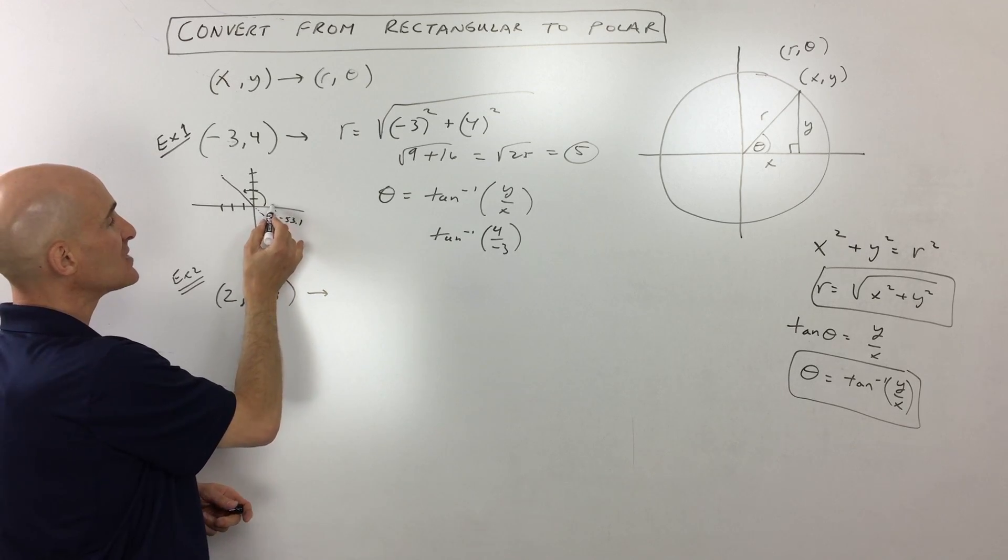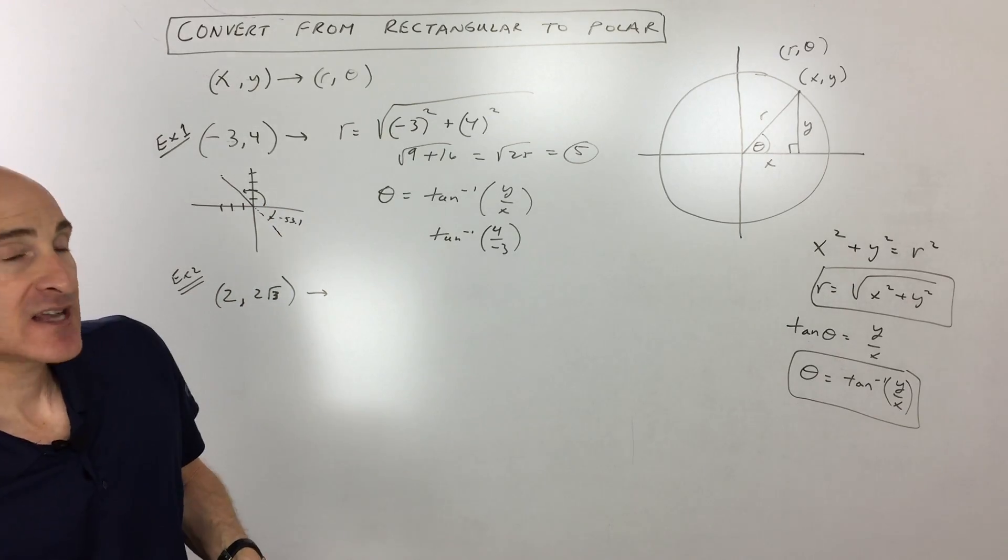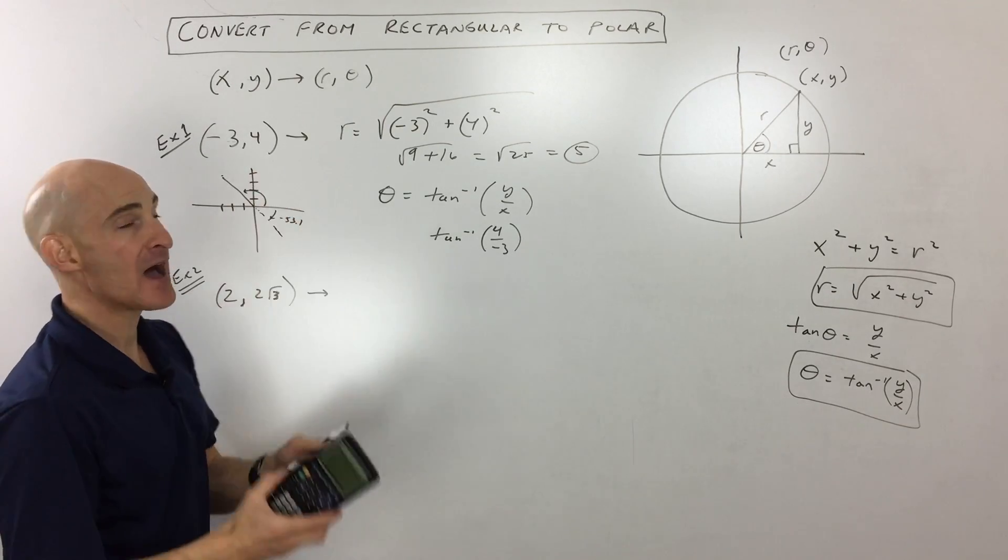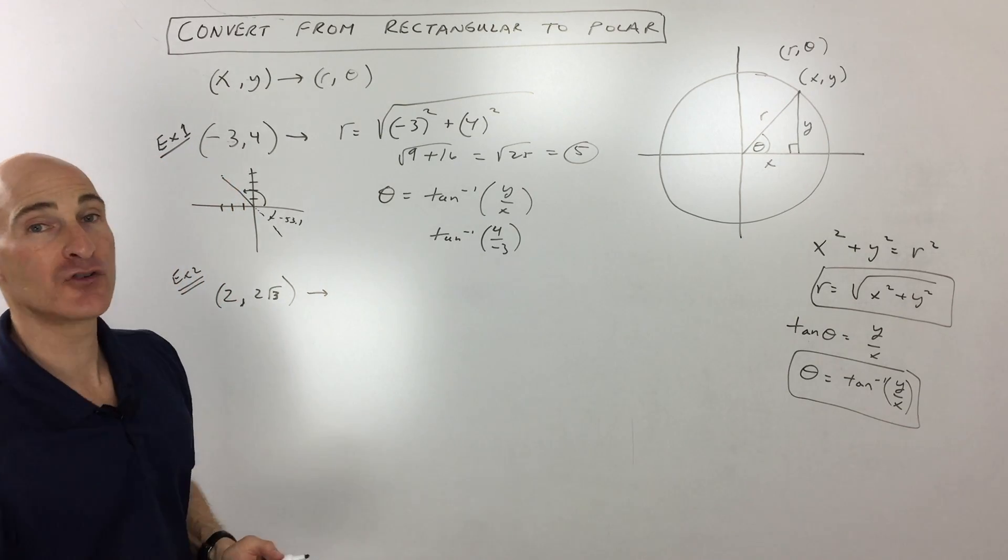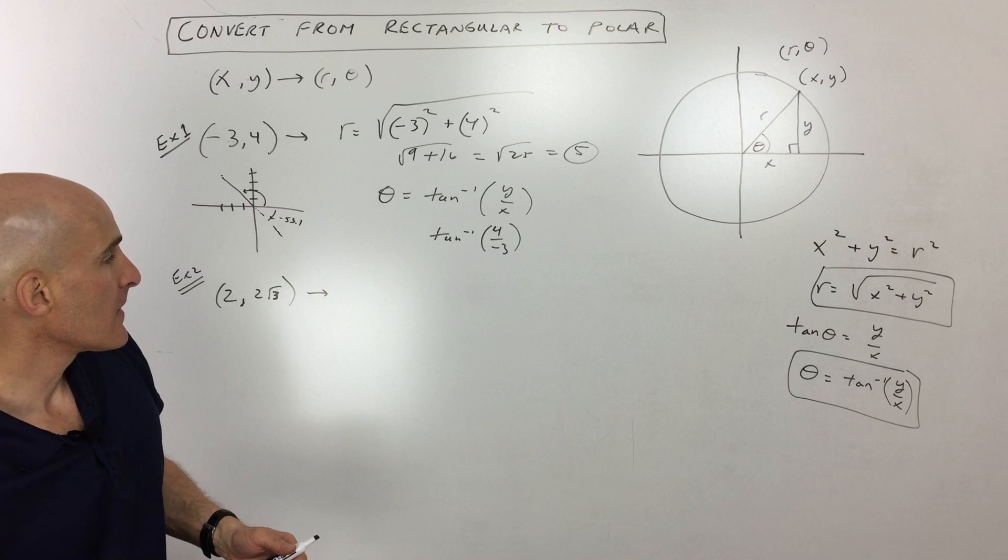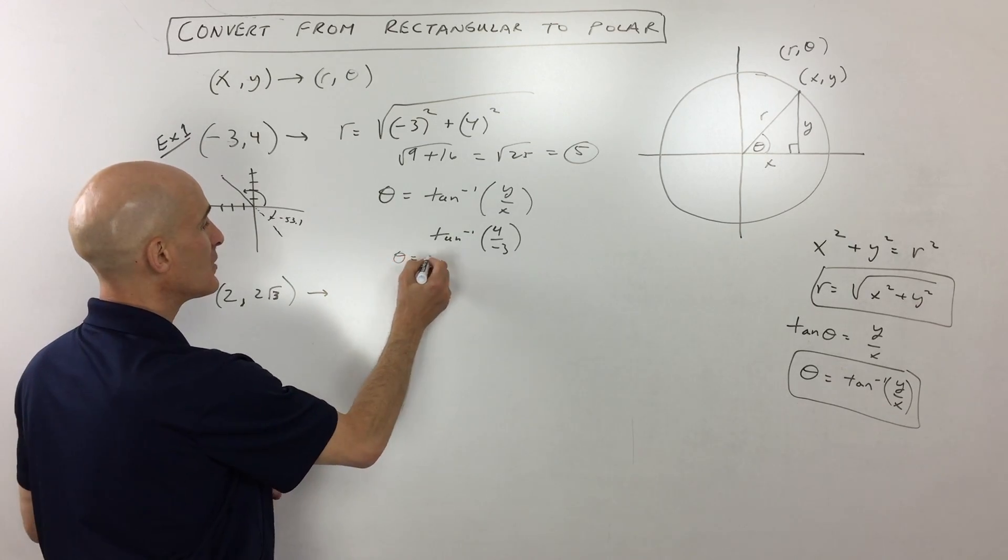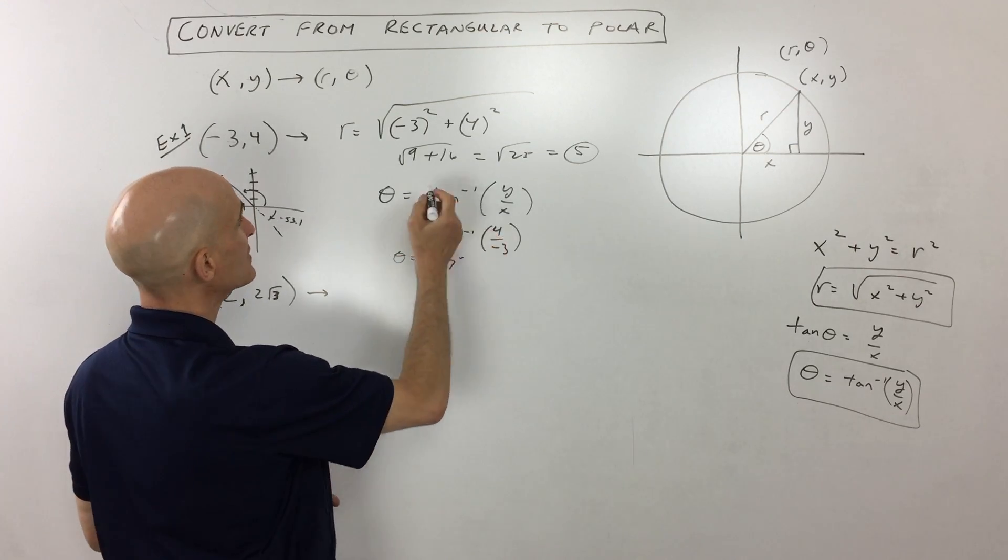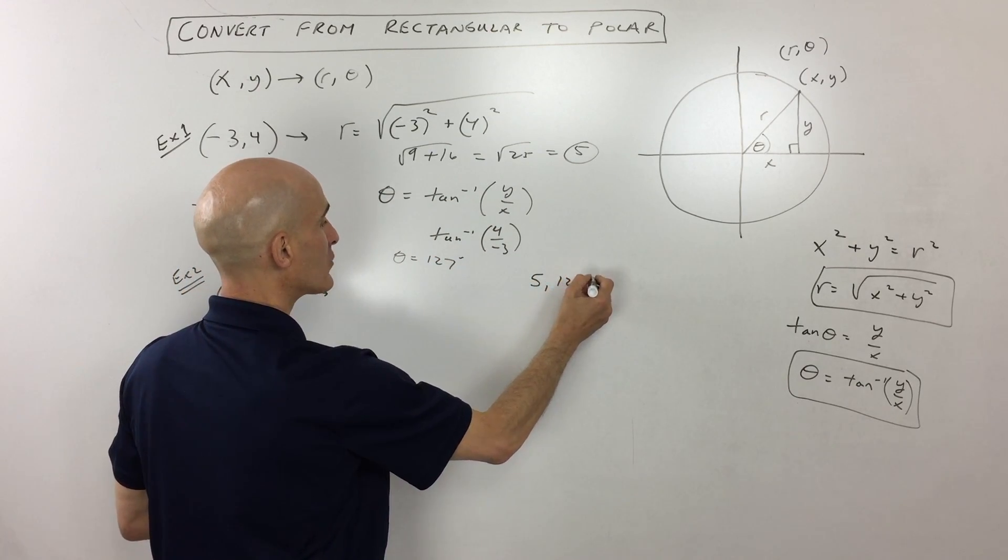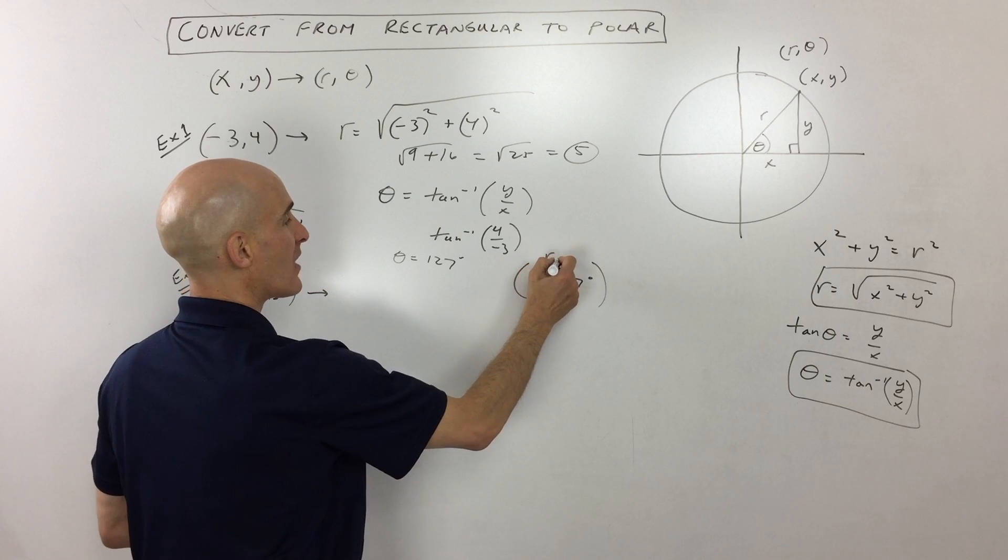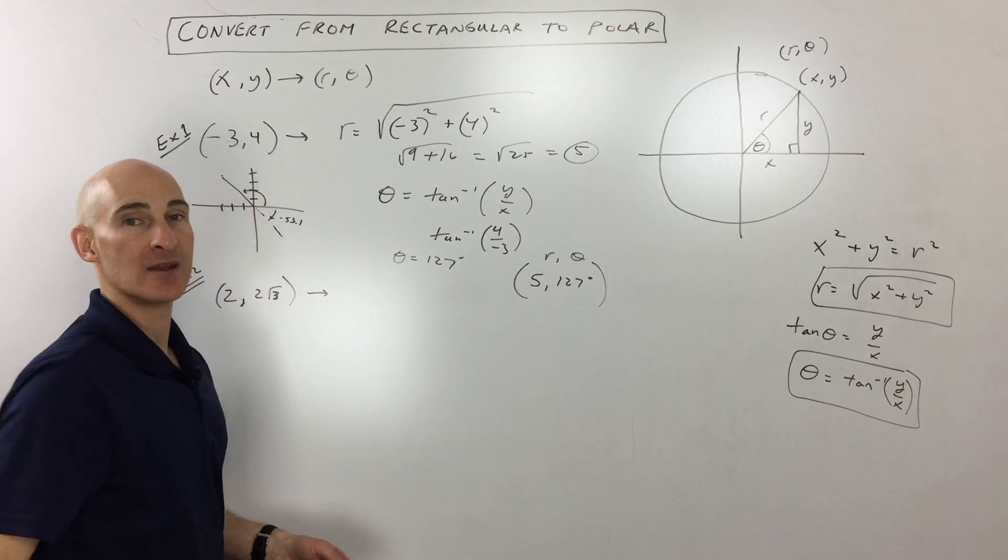So what you do in that case is, because we're over here in the second quadrant, you have to add 180 degrees. Tangent's restricted from negative 90 to positive 90. That's why it's giving me this answer. So if we add 180, we're getting about, I'm going to round to about 127 degrees. So that's our angle. Theta equals 127 degrees. If we put it together, the radius and the angle, 5, 127 degrees, that's our theta. And that's our point in polar coordinates.